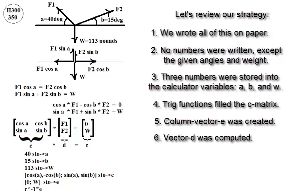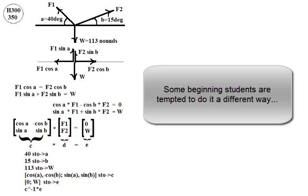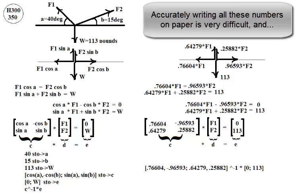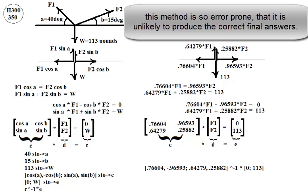Vector D was computed. Vector D, which contains the unknowns, F1 and F2. Some beginning students are tempted to do it a different way. Accurately writing all these numbers on paper is very difficult. And this method is so error-prone that it's unlikely to produce the correct final answers.